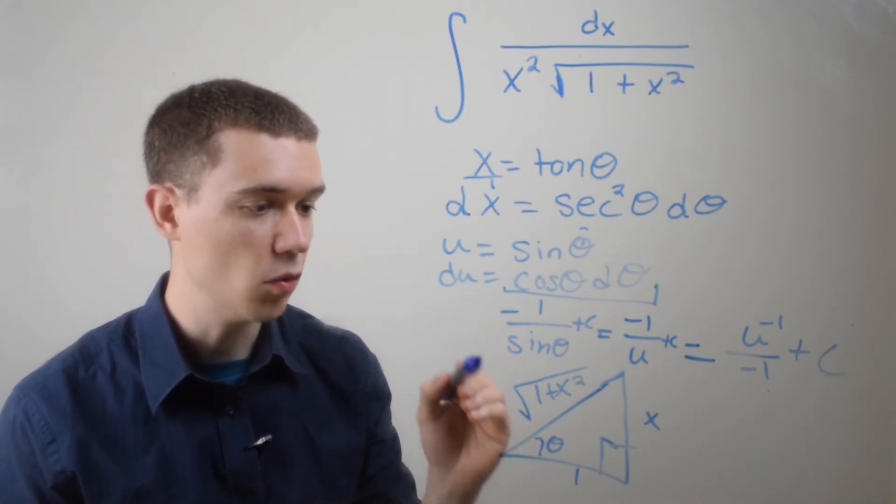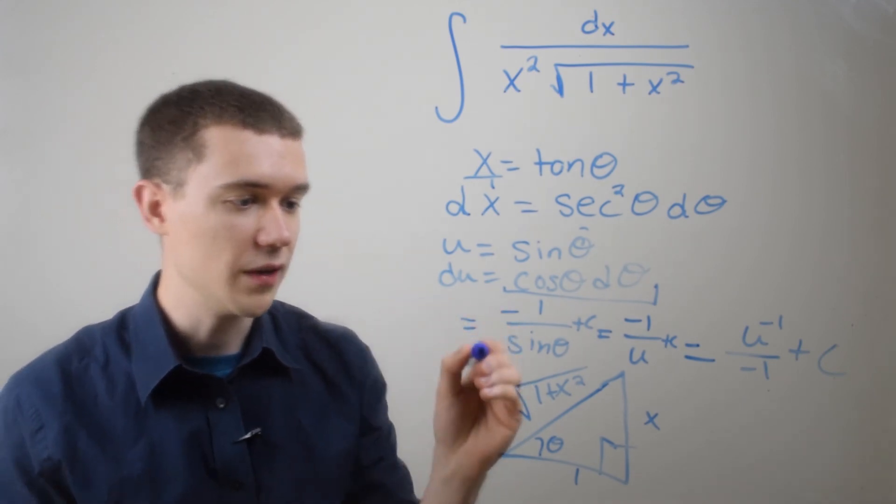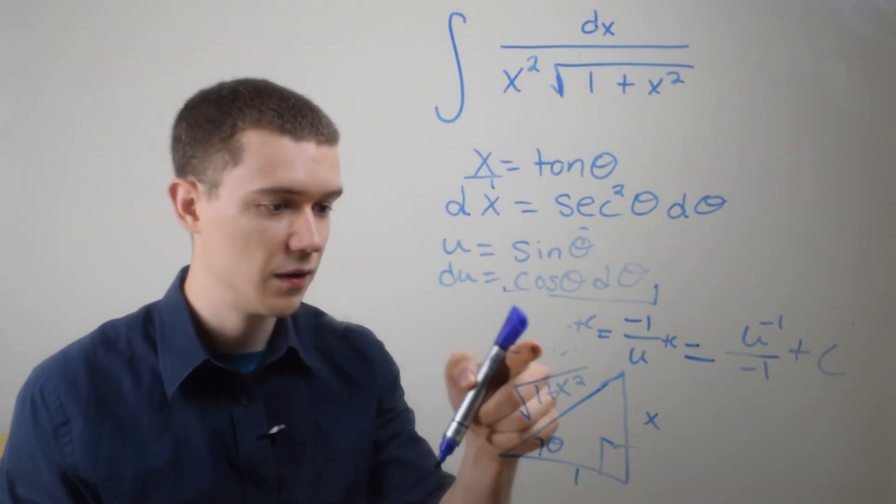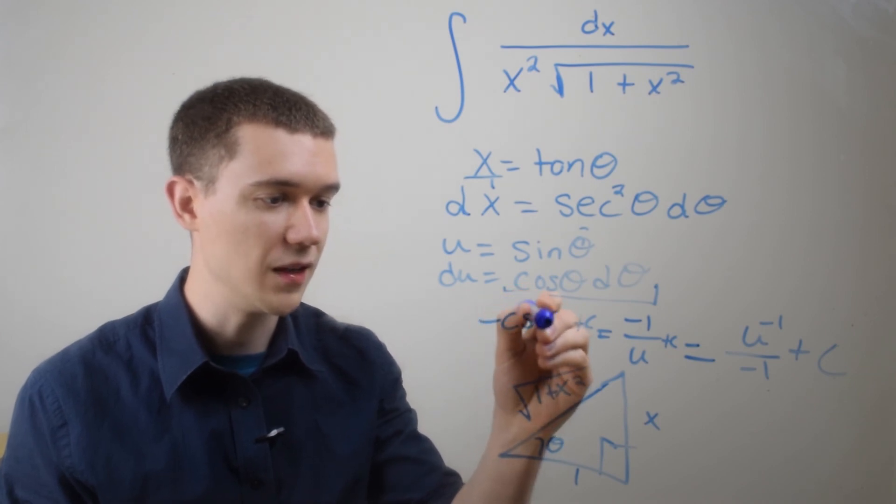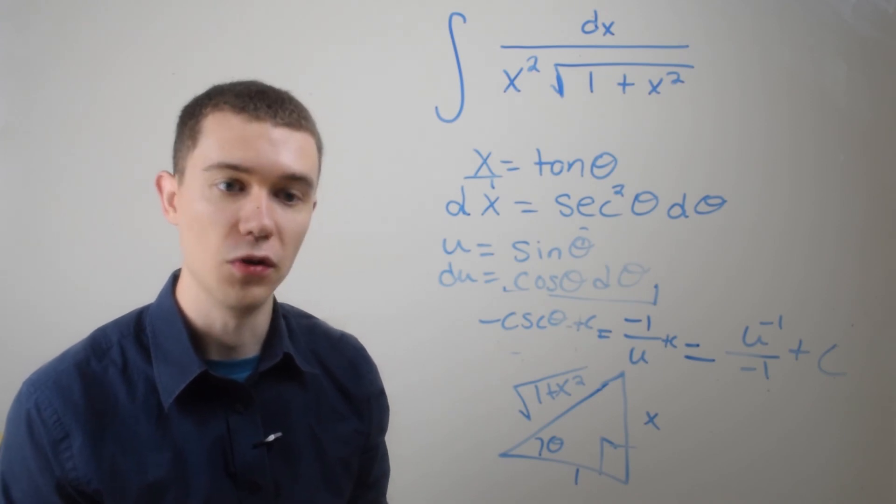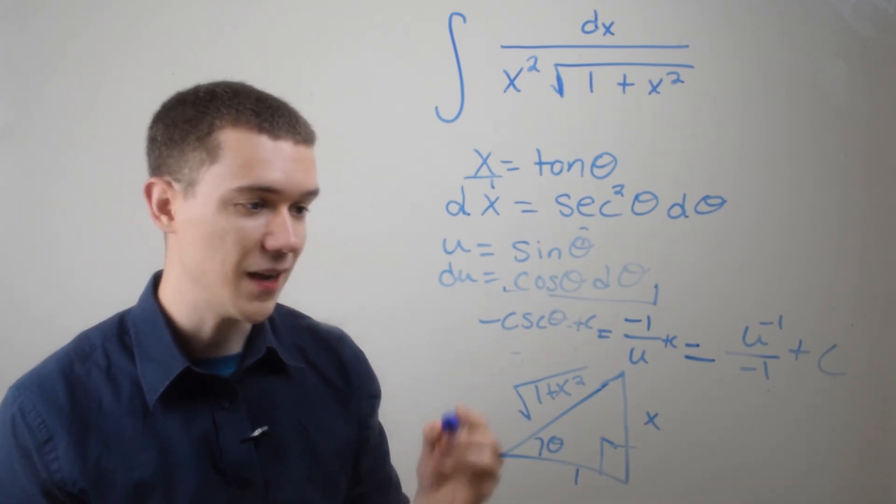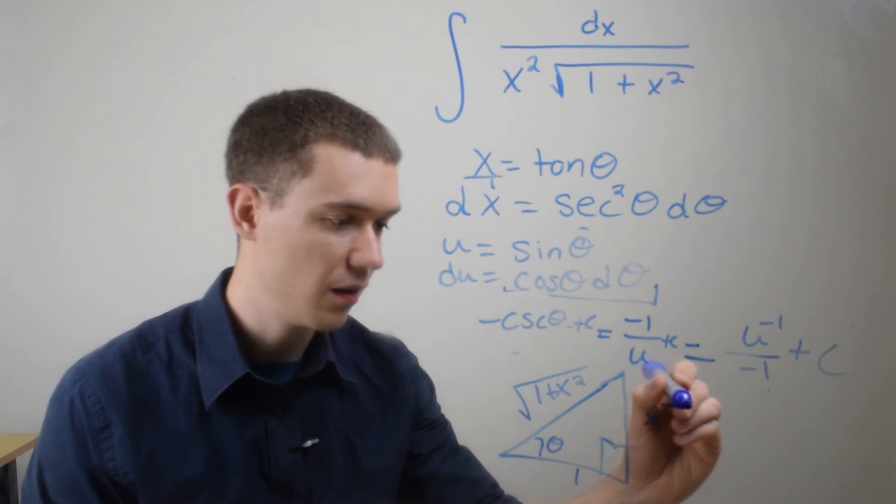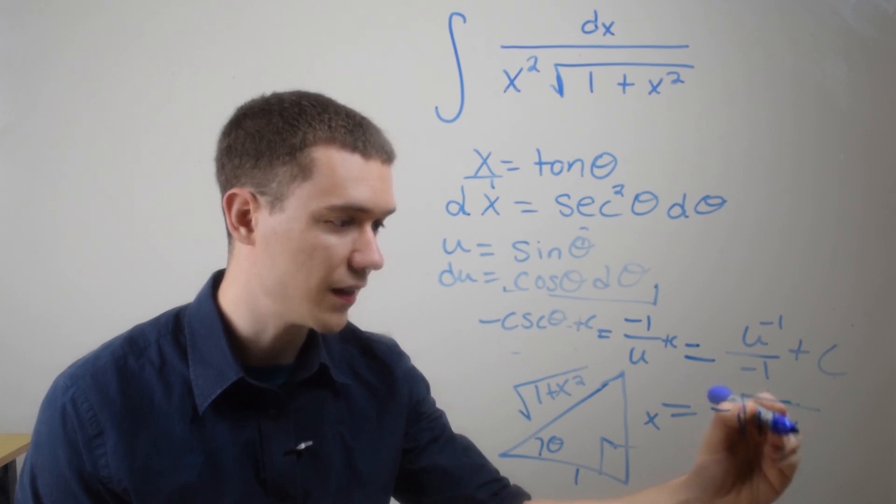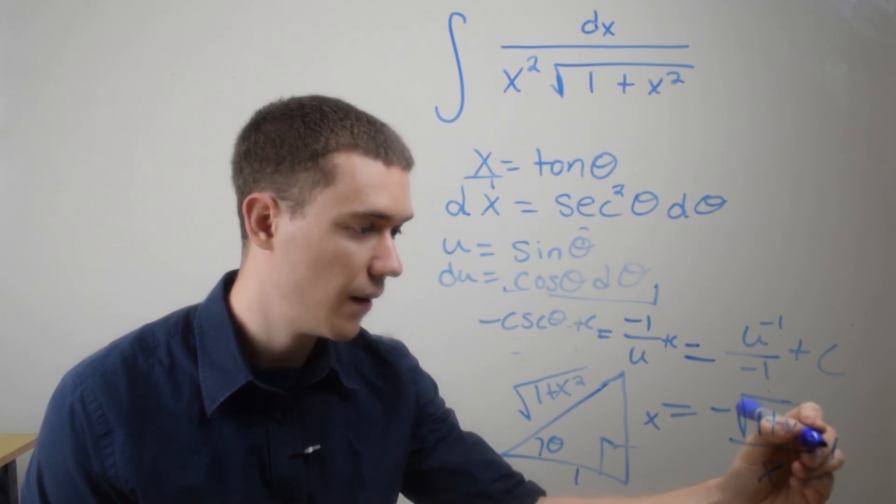So now I can tell you what sine is. And maybe to make my life a little bit easier, I'll just write sine as one over cosecant. So this is actually minus cosecant because that's one over sine. And cosecant is hypotenuse over opposite. So in this triangle, hypotenuse is one plus x squared. Opposite is x. So it looks like our answer should be minus square root of one plus x squared all over x. That's our opposite side. Plus c.